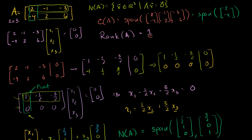In the last video, I had this 2 by 3 matrix A, and we figured out all of the subspaces associated with this matrix. We figured out its null space, its column space, we figured out the null space and column space of its transpose, which you can also call the left null space, and the row space, or the space spanned by A's rows. Let's write it all in one place and see if we can visualize what all of these look like, especially relative to each other.